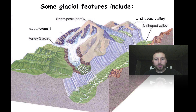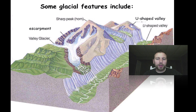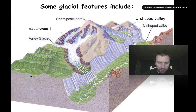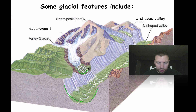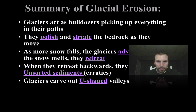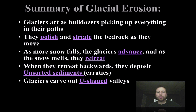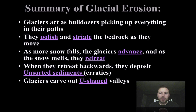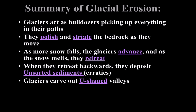These are some different glacial features formed by either the convergence of glaciers or from where they form, and we can once again see U-shaped valleys here. Here's a little summary of glacial erosion — I'll leave this up for you. I hope you enjoyed this screencast on glaciers; we'll go more into this in class. Take care!